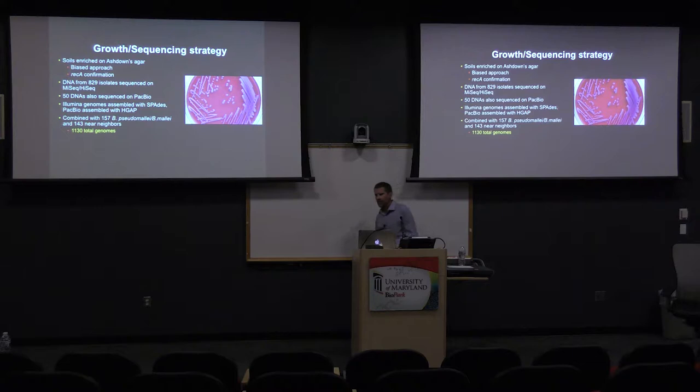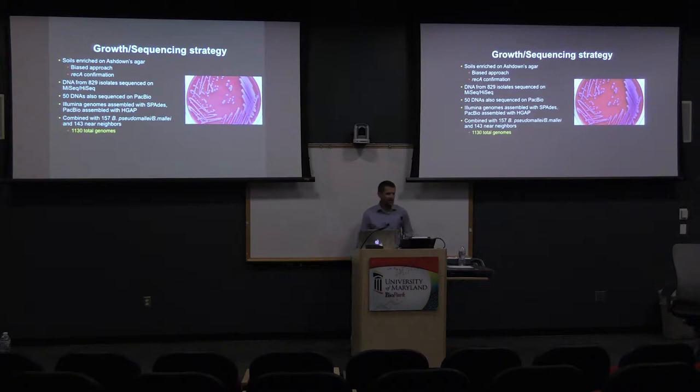For soil isolation, we mixed soil with water, incubated at 37°C, then transferred to Ashdowns medium containing gentamicin — a selective medium that kills most soil bacteria while leaving Burkholderia, which are almost all gentamicin-resistant. After seven days at 37°C, we plated on Ashdowns agar. B. pseudomallei produces a characteristic fried-egg morphology. We picked five colonies, screened with the RECA gene to speciate B. pseudomallei near neighbors, then picked one or all colonies depending on variation observed. We're aware this approach biases toward gentamicin-resistant Burkholderia, though pseudomallei susceptible to gentamicin are rare.